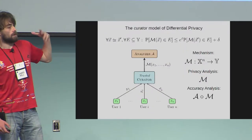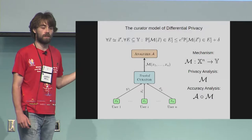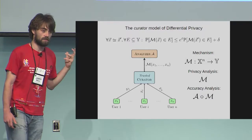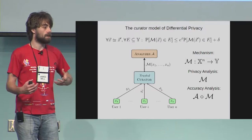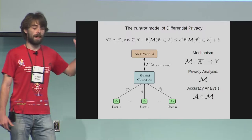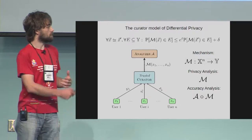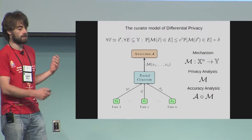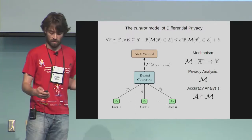So how are we going to apply this definition? Originally the model that differential privacy was developed for is the trusted curator model, where we have some trusted third party. Everyone gives all of the data to this trusted third party. The trusted third party computes some statistics on that data with some randomness added to them and then releases them to an analyzer who is also our adversary. We want the analyzer to be able to say something useful about the data, but without being able to tell too much about any one person because M is differentially private.